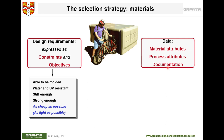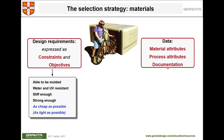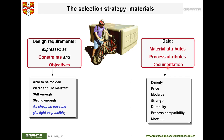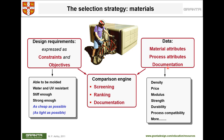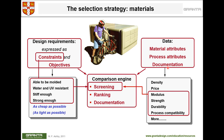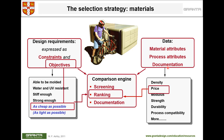You have your design requirements on one side and the material attributes — density, price, modulus, strength, and durability — on the other. All materials go through a screening process to narrow down to those that pass your constraints. This is called screening. Once you eliminate materials that don't meet your constraints, you then rank the remaining ones.